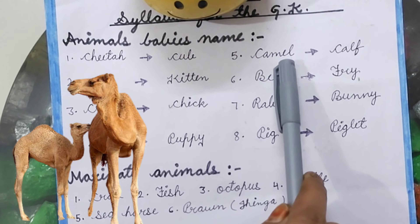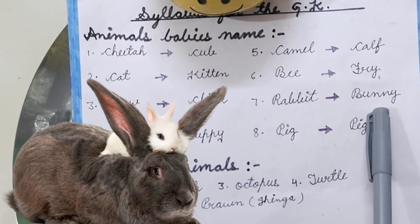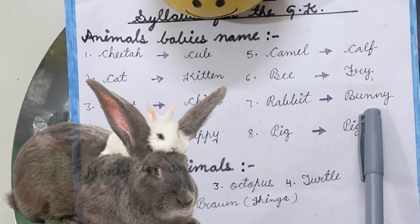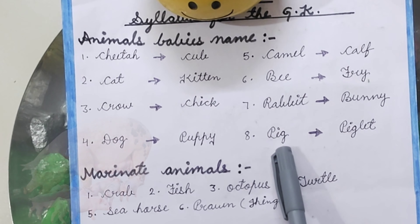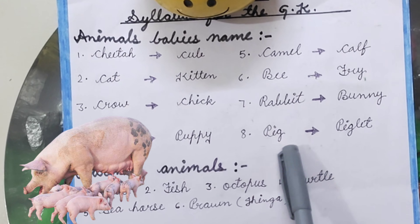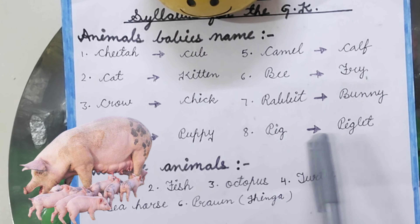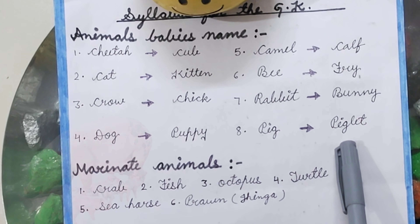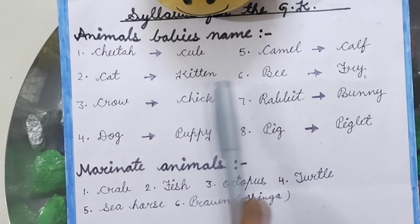Bee — Fry. Rabbit — Bunny. Pig — Piglet.